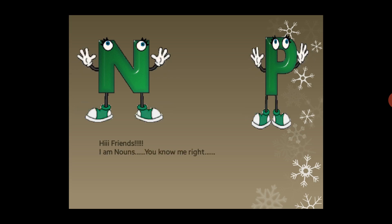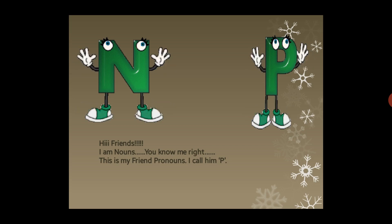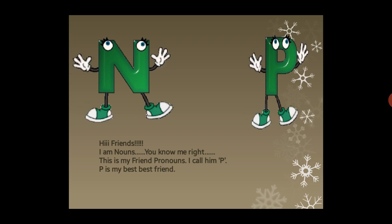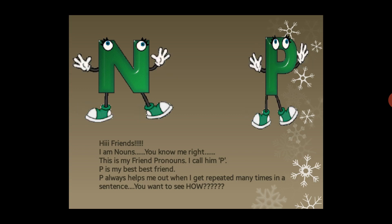N says: 'Hi friends, I am Nouns — you know me, right.' Then he introduces: 'This is my friend Pronouns, I call him P.' So letter P is waving his hand. P is the best best friend of N, just like you have your best best friend. P always helps N out when N gets repeated many times in a sentence.